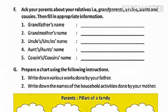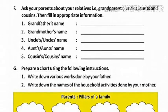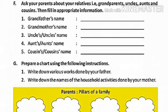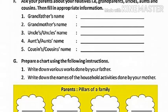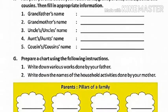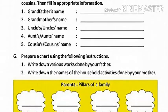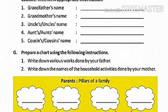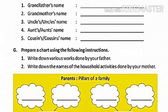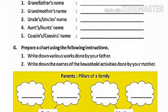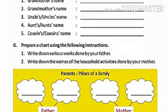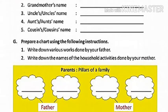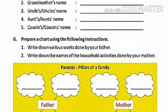On page 15, exercise F: ask your parents about your relatives — grandparents, uncles, aunts, and cousins — then fill in the appropriate information. Number one: your grandfather's name; number two: grandmother's name; number three: uncle's name; number four: aunt's name; number five: cousin's name — the daughter or son of your uncle and aunt.